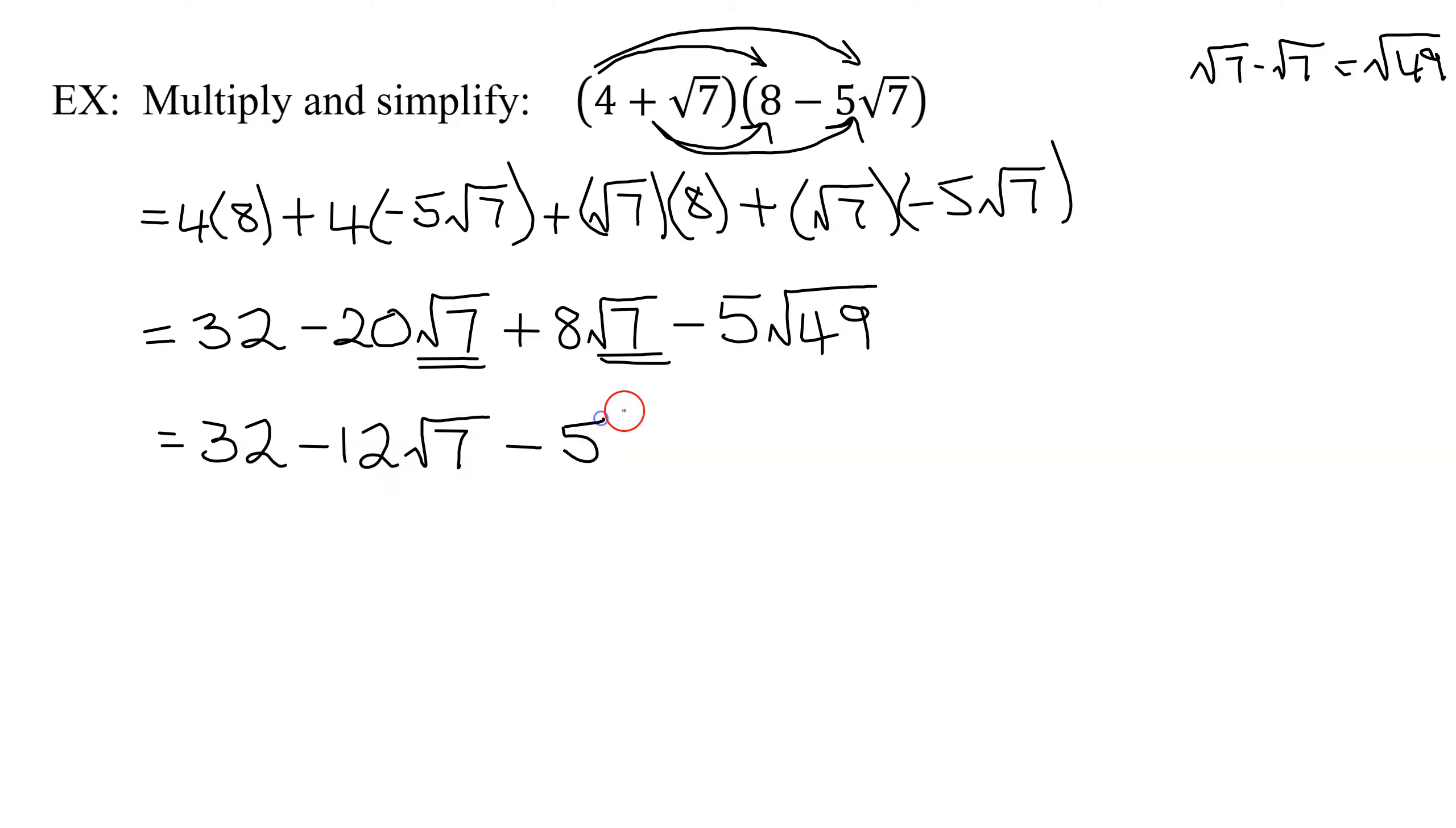Minus 5 times what's the square root of 49? 7. So I have 32 minus 12 times the square root of 7, minus 5 times 7 is 35. So 32 minus 35 is negative 3, minus 12 times the square root of 7.